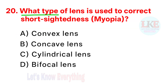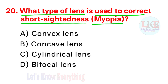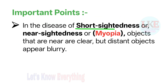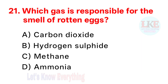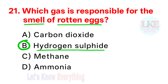Question number 20: what type of lens is used to correct short-sightedness (myopia)? Right answer option B: concave lens. In the disease of short-sightedness or near-sightedness or myopia, objects that are near are clear, but distant objects appear blurry. Question number 21: which gas is responsible for the smell of rotten eggs? Right answer option B: hydrogen sulphide. The symbol of hydrogen sulphide is H2S.